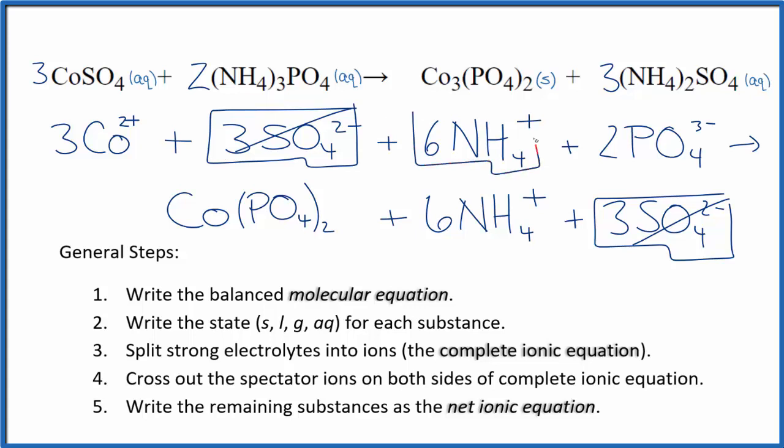Six of these ammonium ions in the reactants, and again, six ammonium ions in the products. So we cross those out. But what's left, that's the net ionic equation for CoSO₄ plus (NH₄)₃PO₄.